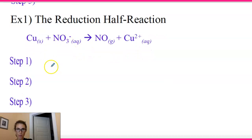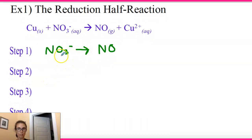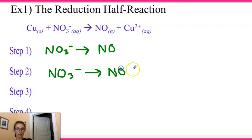Now for the reduction half-reaction, we have NO₃⁻ going to NO. Our nitrogens are already balanced. We need to balance oxygens using H₂O: we have three O's on the left and one on the right, so we add 2 H₂O to the right side: NO₃⁻ → NO(g) + 2H₂O(l).